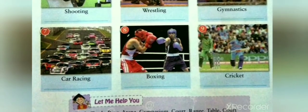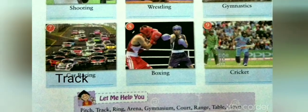Picture six is gymnastics, and gymnastics is done in the play area called gymnasium. We will write: gymnasium. The seventh picture is car racing, and car racing is done on the track. We will write: track. The next picture is boxing, and the play area where boxing is done is called ring. We will write: ring.